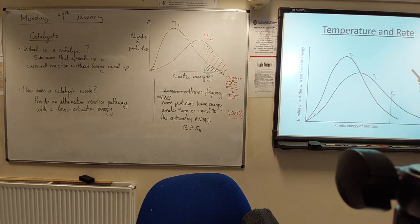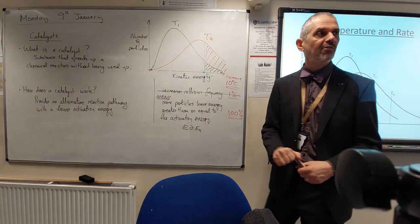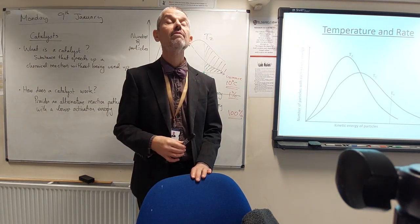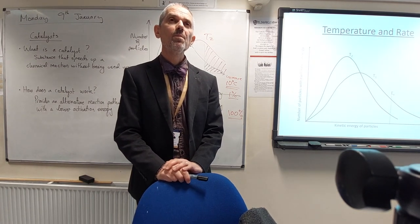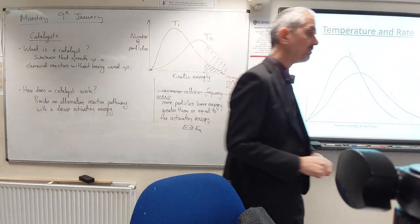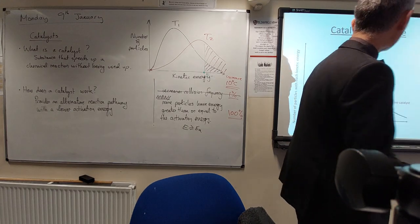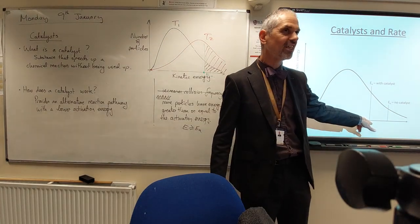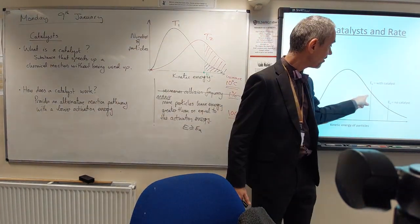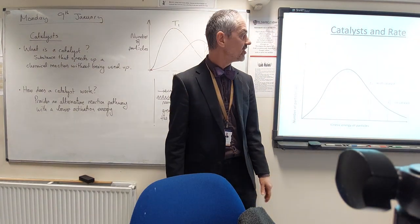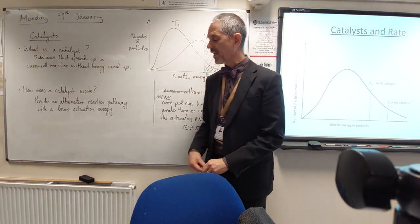So how would I change the Maxwell-Boltzmann distribution graph to show the effect of a catalyst? The activation energy shifts more to the left — exactly right. Here's my activation energy with no catalyst. If I added a catalyst, that amount of energy that particles need to react would shift to the left. Obviously we've now got more particles to the right of that line — those particles have greater than or equal to the activation energy, so all of those particles would now be able to react.